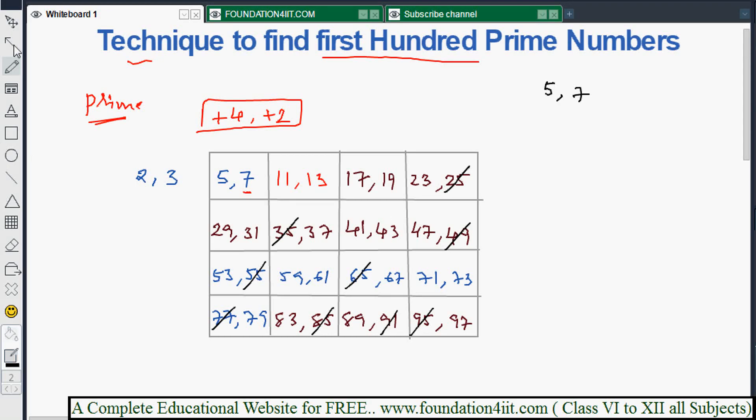Now you can count the remaining numbers: 1, 2, 3, 4, 5, 6, 7, 8, 9, 10, 11, 12, 13, 14, 15, 16, 17, 18, 19, 20, 21, 22, 23, 24, 25. There are 25 prime numbers between 1 to 100.